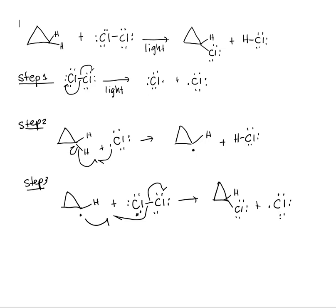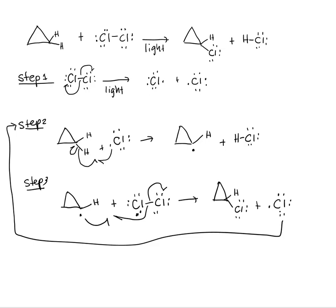That chlorine radical gets back to step two — it reacts with another molecule of cyclopropane, producing a carbon radical, which then reacts with another molecule of Cl₂ to produce another molecule of product and another chlorine radical. The cycle repeats itself until you have some kind of termination mechanism or until the reactants are all used up.